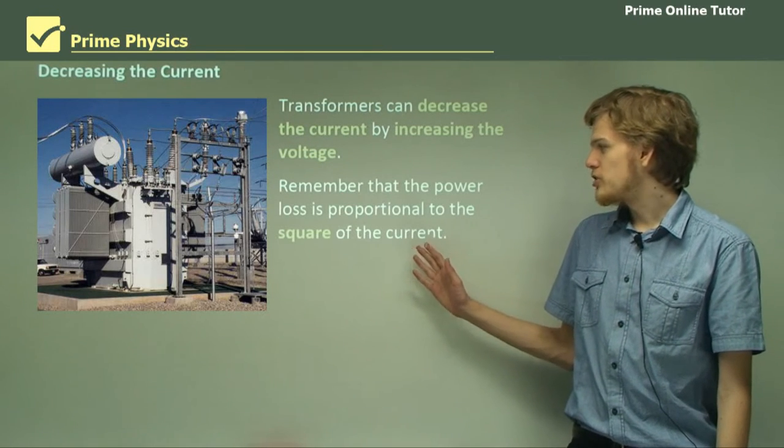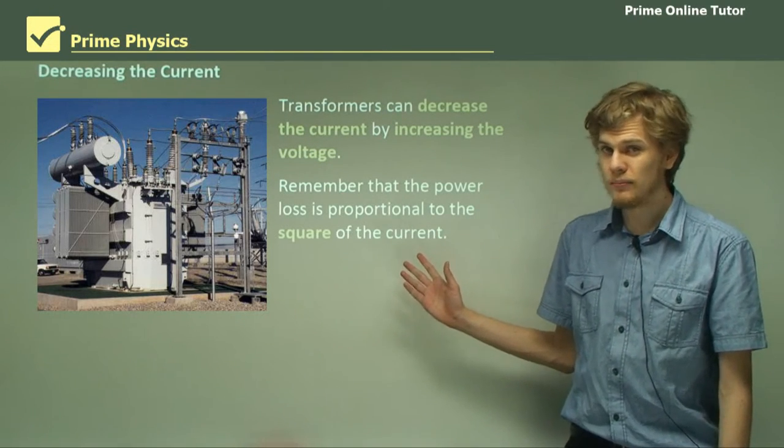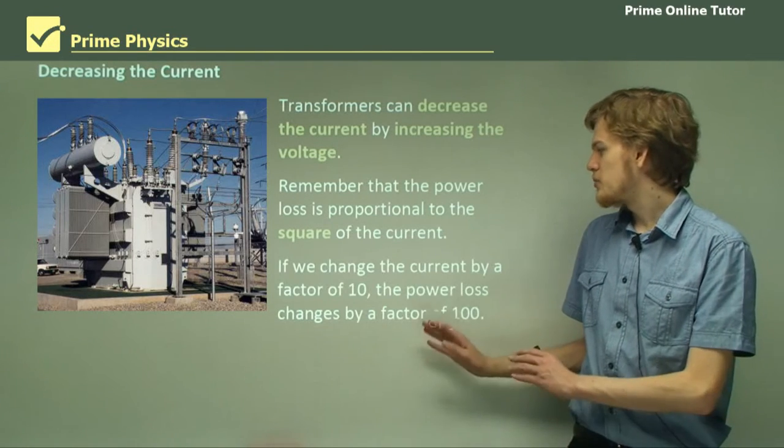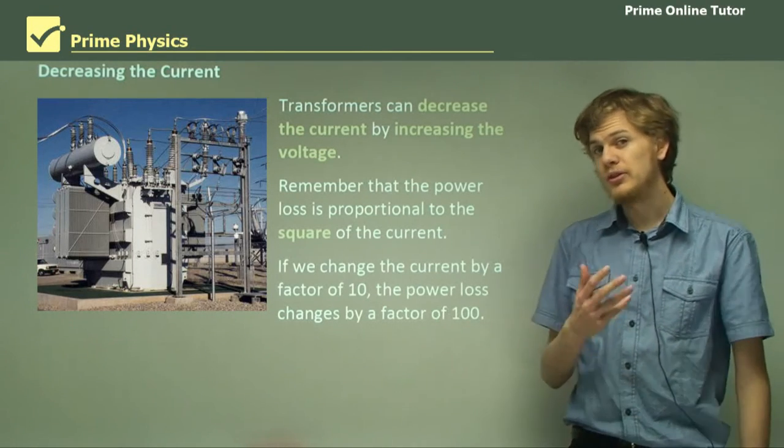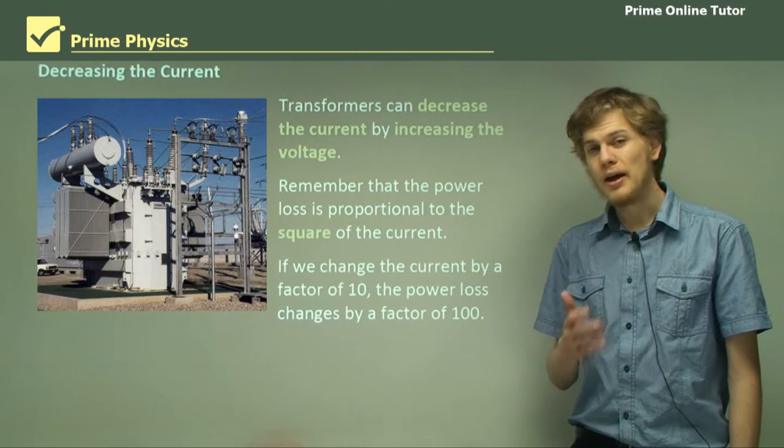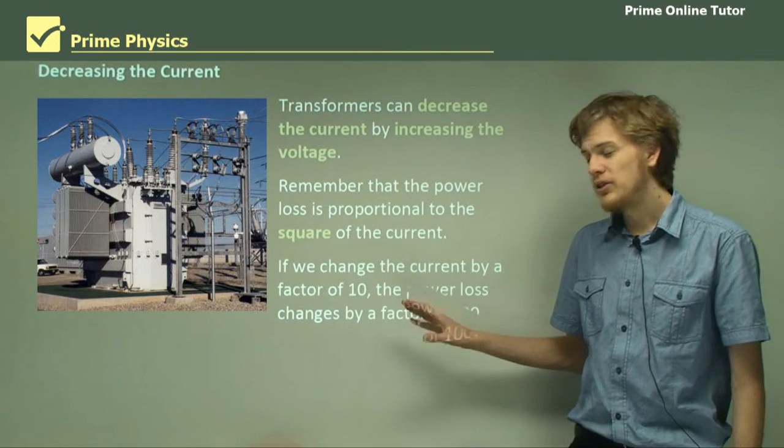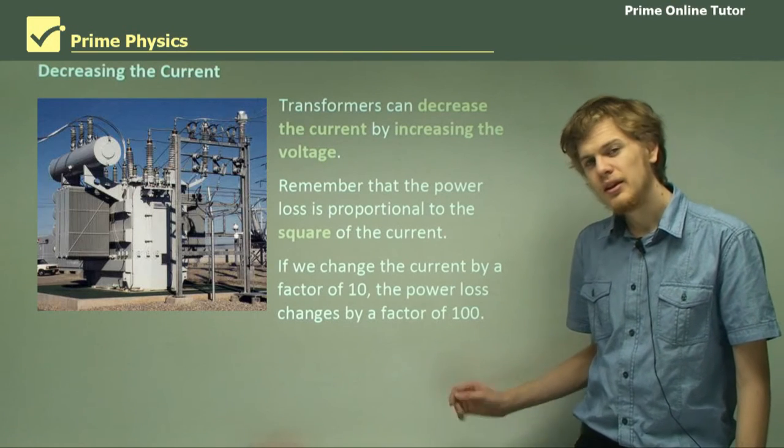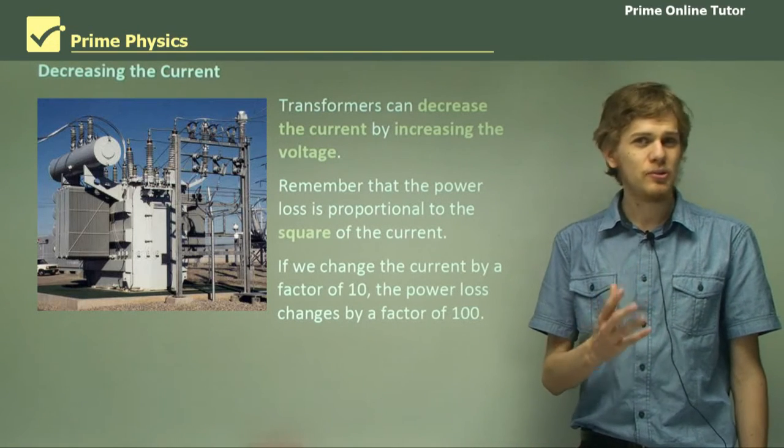Remember that the power loss is proportional to the square of the current which means that if we change the current by a factor of 10 using a transformer then we decrease the power loss by a factor not of 10 but of 100. So minimizing the current really helps us.